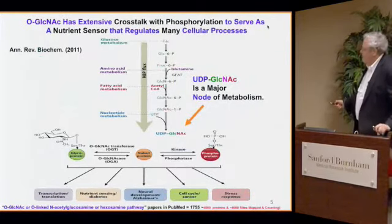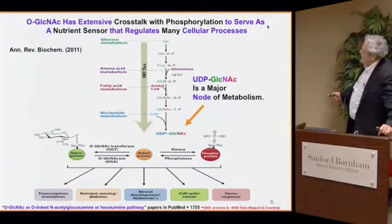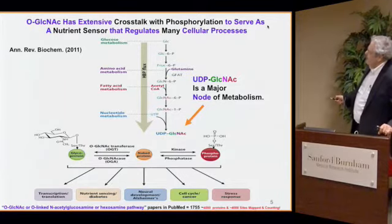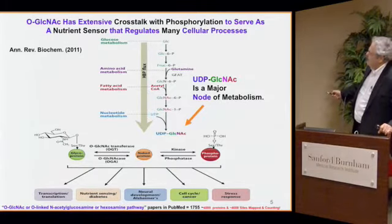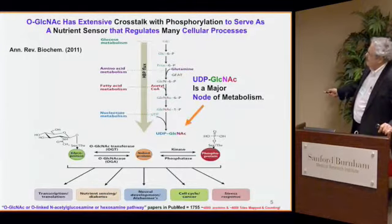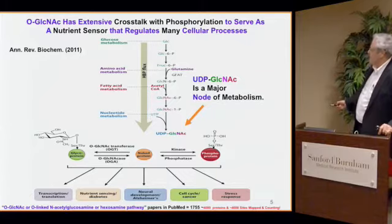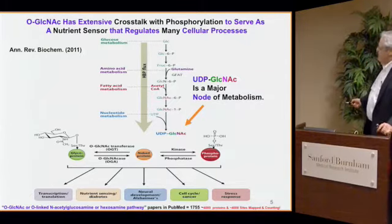It turns out the donor, UDP-GlcNAc, which you've heard a lot about at this meeting, is actually a major node of metabolism — a lot of people haven't appreciated that until recently. The levels of UDP-GlcNAc in cells are directly tied to glucose, amino acid, fatty acid, and nucleotide metabolism. So all of the major metabolic pathways in cells — the flux through these pathways — affects the levels of UDP-GlcNAc. The enzyme that adds O-GlcNAc is exquisitely sensitive to the level of UDP-GlcNAc. Because of this interplay, O-GlcNAc is involved in practically everything the cell does: transcription, nutrient sensing, the function of neurons, cell cycle, and stress responses.